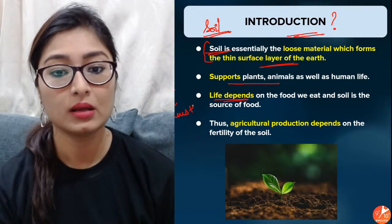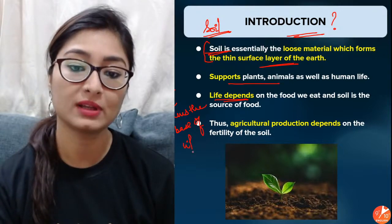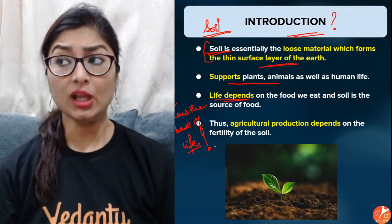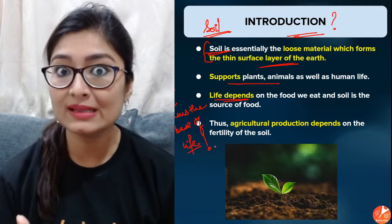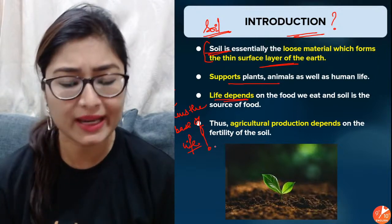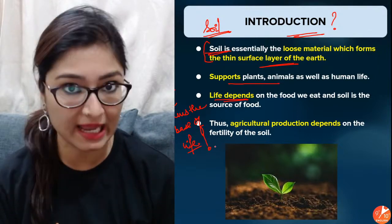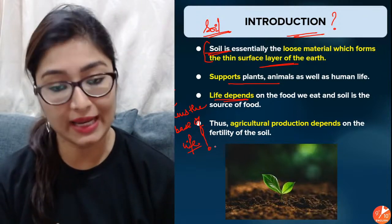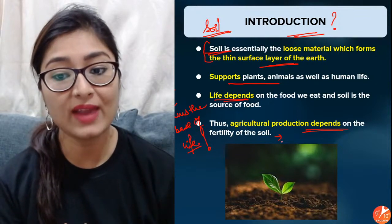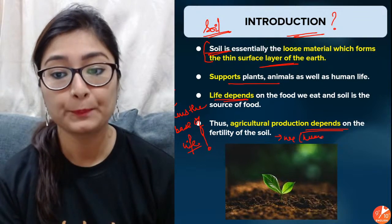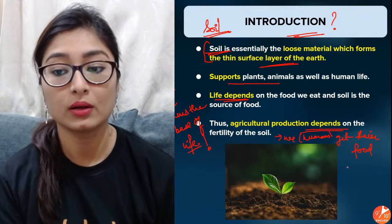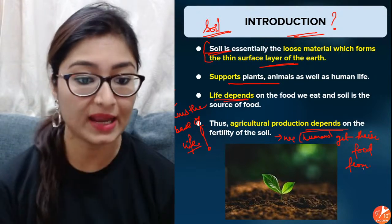Soil forms the base of life. The plants that grow over it provide food to animals and humans. Soil is a source of food for microorganisms and all other beings. Agricultural production also depends on it, and that is where humans get their food from. That is what makes soil very, very important.